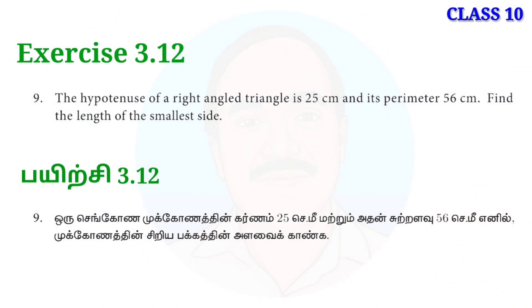The hypotenuse of a right angle triangle is 25 centimeters and its perimeter is 56 centimeters. Find the length of the smallest side.